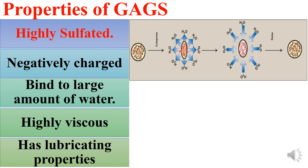When a solution of GAG is compressed, water is squeezed out; when the compression is released, the GAG springs back to its original hydrated form. This property contributes to the resilience of synovial fluid and vitreous humor of the eye, protecting us from various injuries.